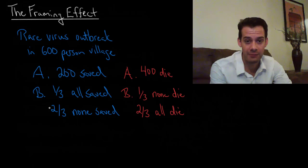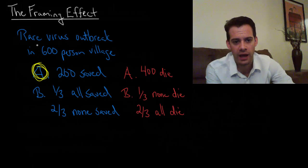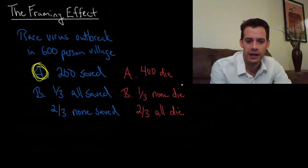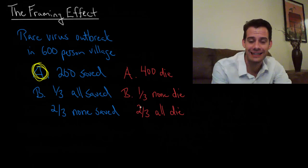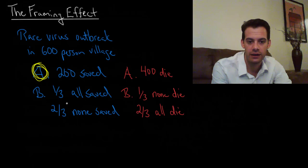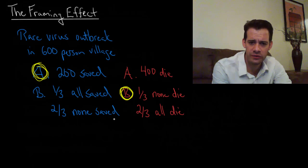Now what Tversky and Kahneman found is that in the first situation program A was popular. People liked saving the 200 lives. In the second version same question and mathematically identical answers. You can probably notice that program A is the same thing here and program B is the same thing. But in the second case program B was more popular. So what's going on?